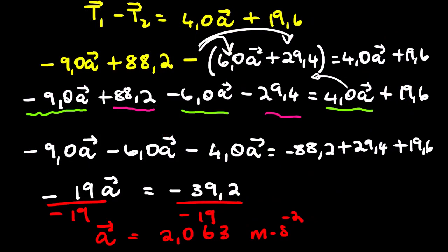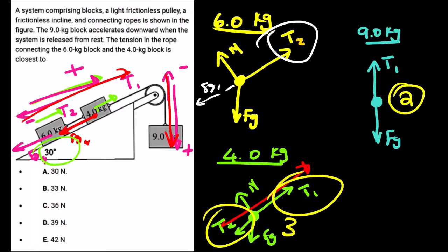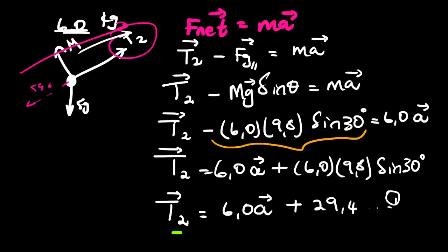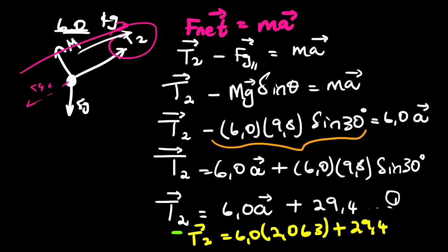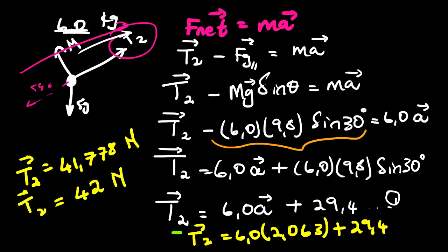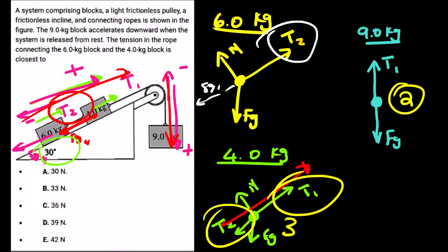Remember that we are looking for T2. We can use equation 1 and substitute our acceleration: T2 = 6.0 × 2.063 + 29.4. We get T2 = 41.778 N, which rounds to 42 N. Looking at the multiple choice options, the correct answer is option E.